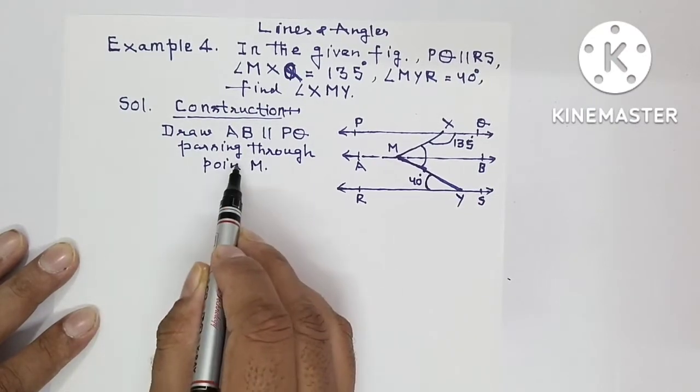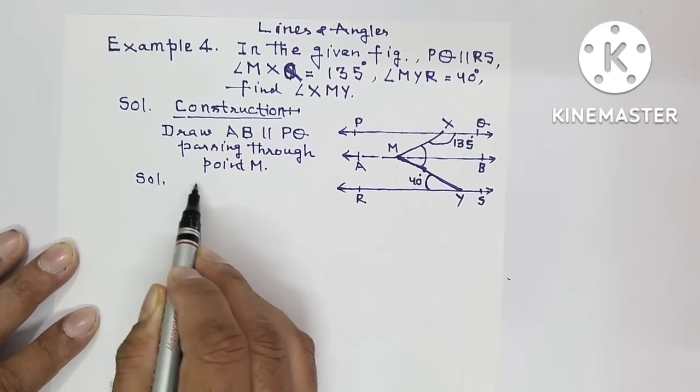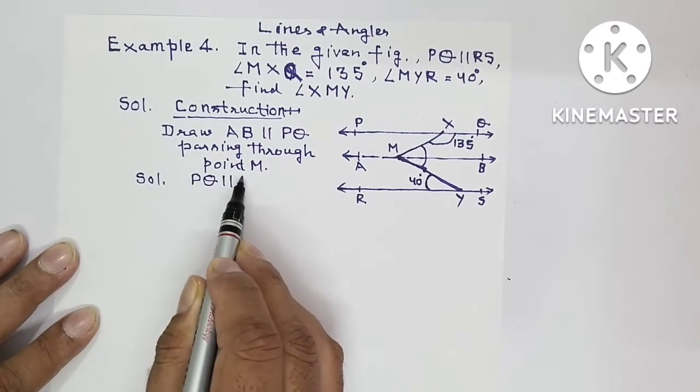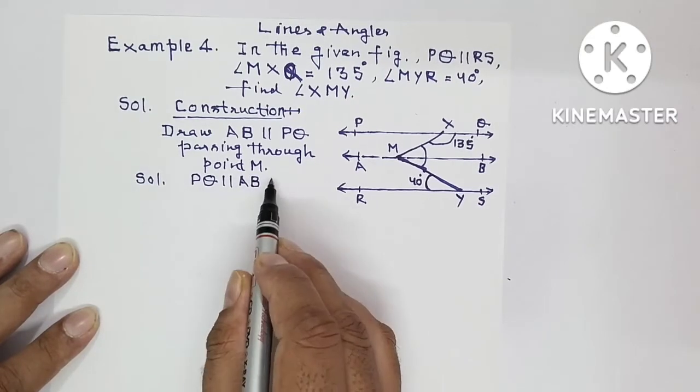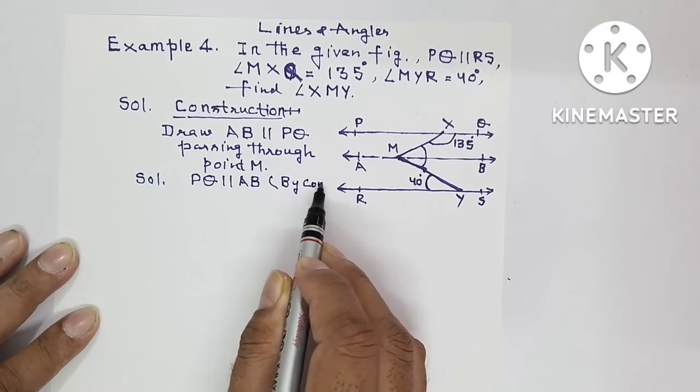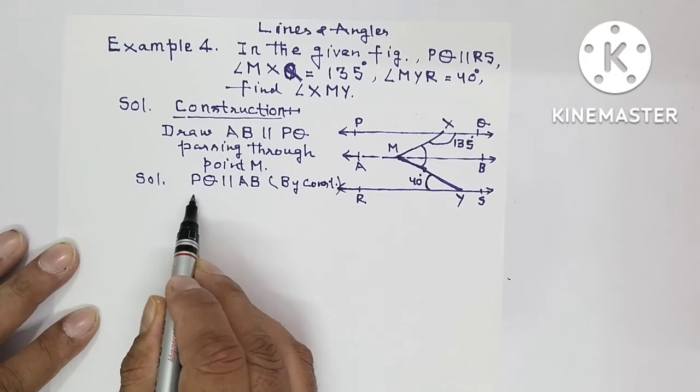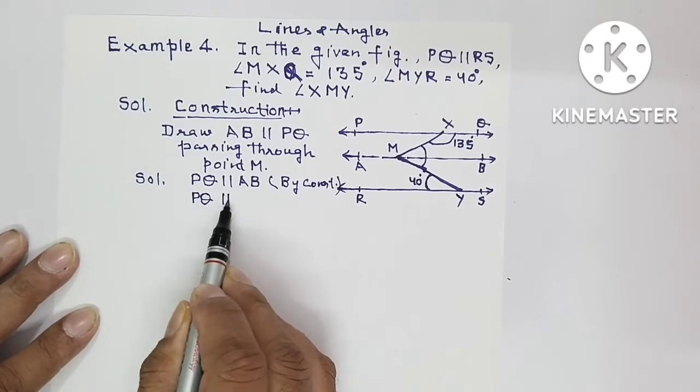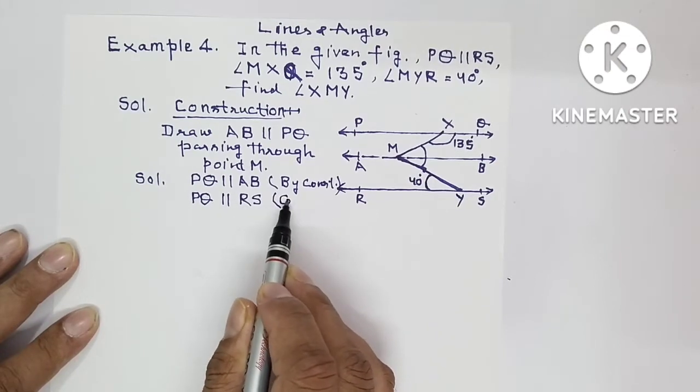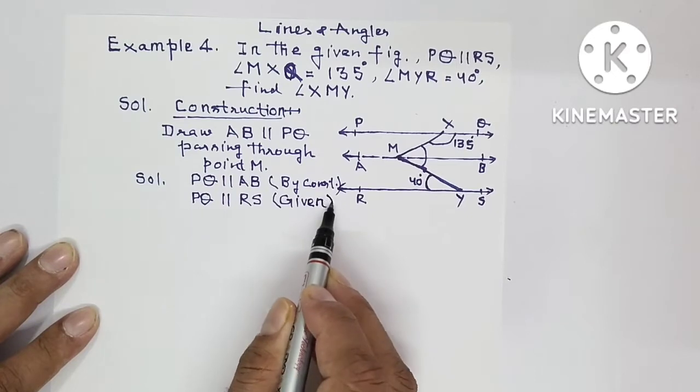Now the solution. PQ is parallel to AB by construction. Then you are given PQ is parallel to RS. So we know that two lines parallel to the same line are parallel to each other. Therefore AB is parallel to RS.